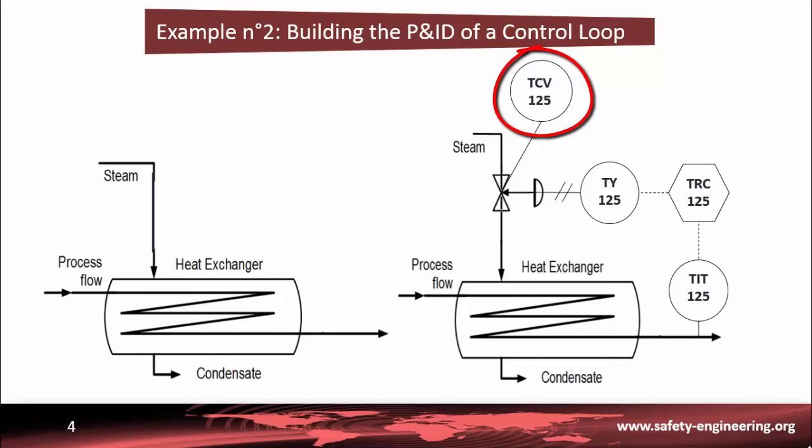The temperature control valve will be a fail closed valve, FC, because if there is a problem and the valve doesn't receive a signal, it is better to stop heating the process flow rather than take the risk of overheating it. Let's have a look at this line now. All lines with regard to the transit signal are dot lines for the electrical signal at the input and output of the controller and a slash line for the pneumatic signal to supply the diaphragm casing of the valve.